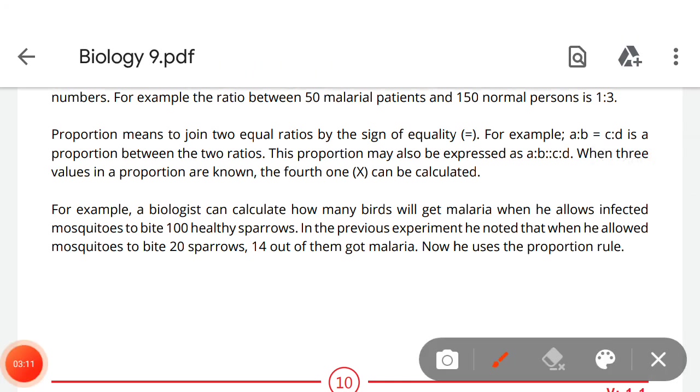Proportion means to join two equal ratios by the sign of equality. For example, a:b = c:d is a proportion between the two ratios. This proportion may also be expressed as a:b::c:d. When three values in a proportion are known, the fourth one can be calculated.